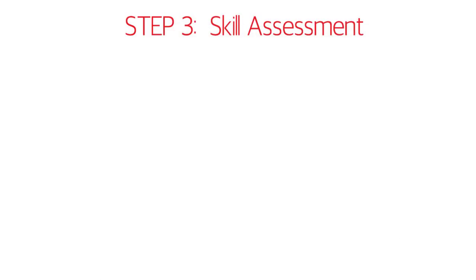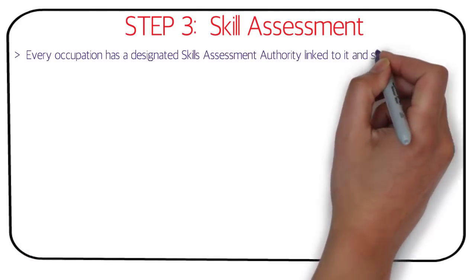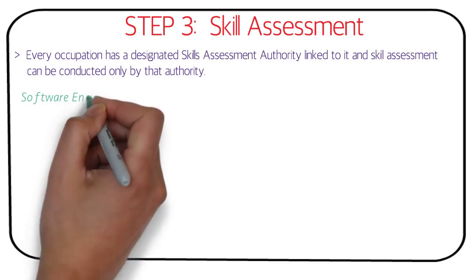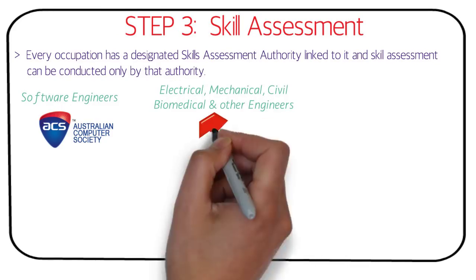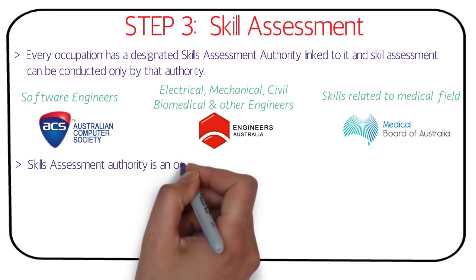Step three is skill assessment — very important. Every occupation has a designated skill assessment authority linked to it, and assessment can only be conducted by that authority. For example: software engineers use the Australian Computer Society (ACS); electrical, mechanical, civil, biomedical and other engineers use Engineers Australia; medical field occupations use the Medical Board of Australia.